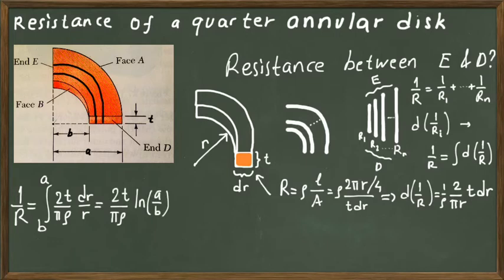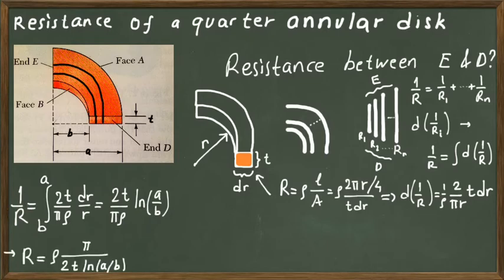Taking this integral, the result is that the inverse equivalent resistance equals 2t divided by (π × ρ) times the natural logarithm of a divided by b. Taking the inverse of this gives the actual resistance: R = ρπ divided by (2t) times the natural logarithm of a over b.